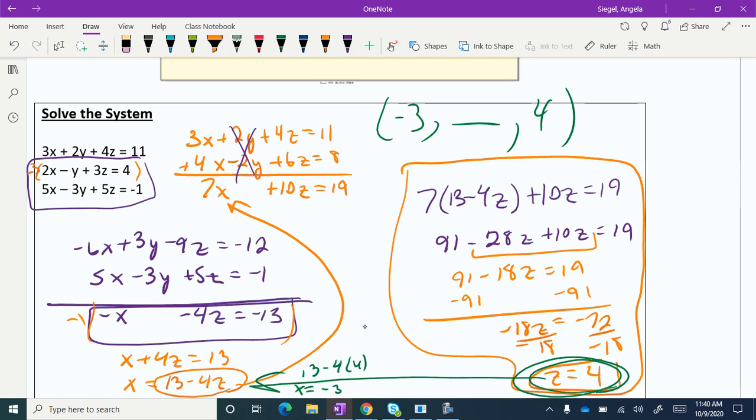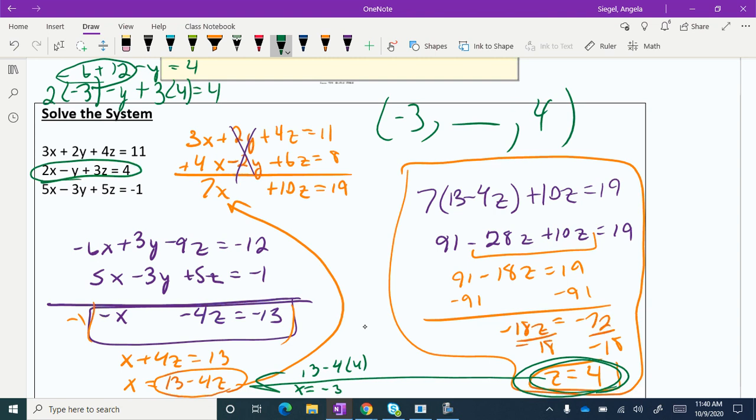To figure out y, I think we're going to go back to this original problem. It really doesn't matter which one. I'll probably just do that one. That looks like the easiest one. So 2 times negative 3 minus y plus 3 times 4 equals 4. This is negative 6 plus 12 minus y equals 4. That is 6. I'm going to subtract 6 on both sides. I get negative y equals negative 2. So y equals 2. And this is my final answer.